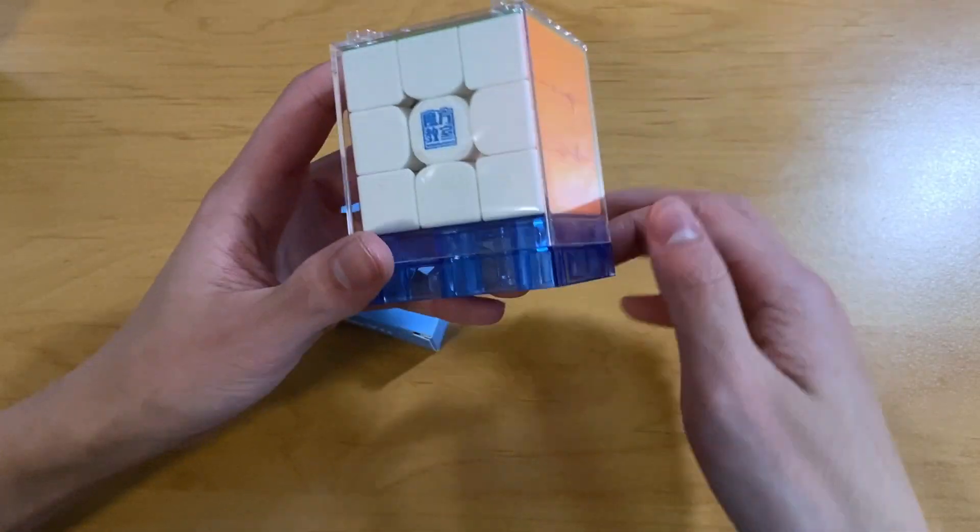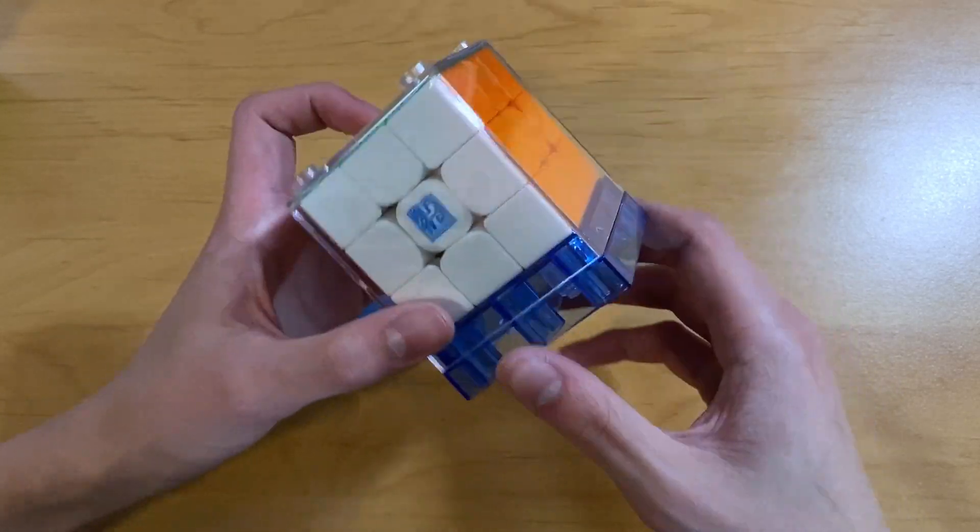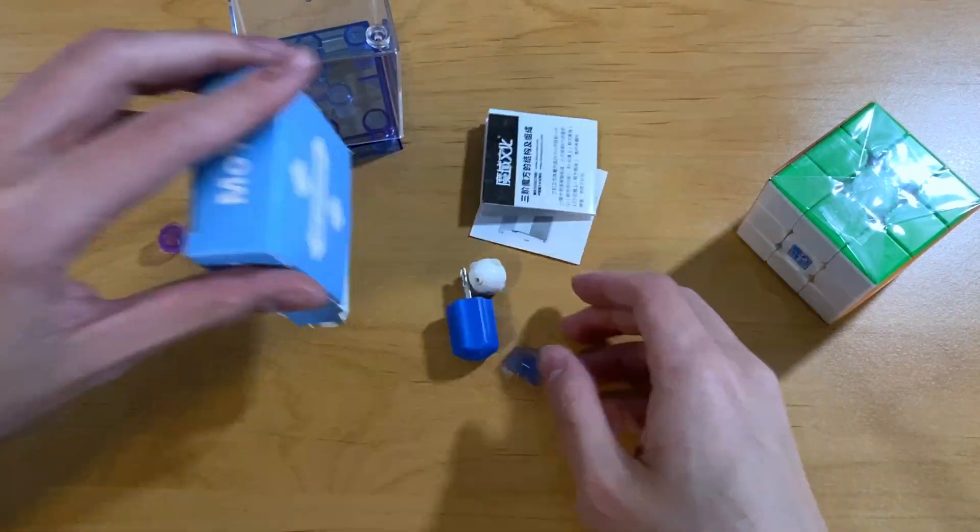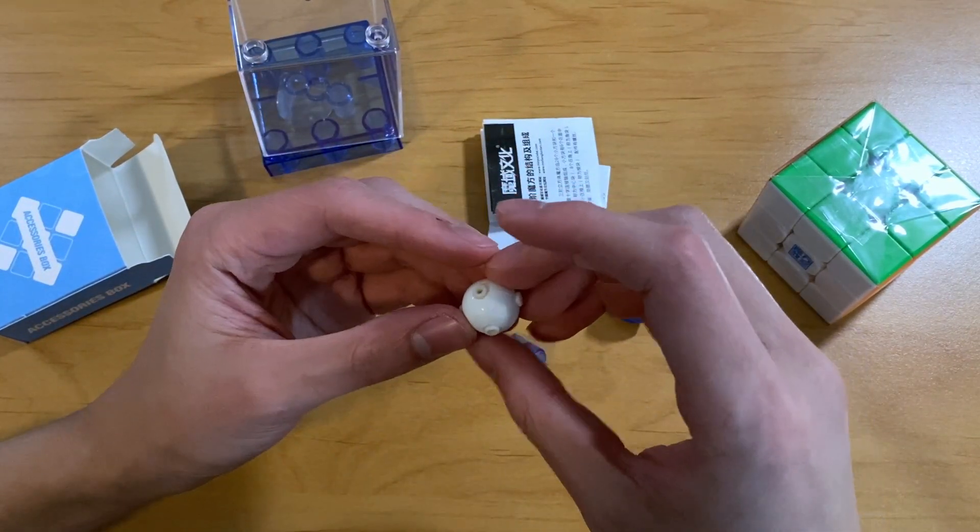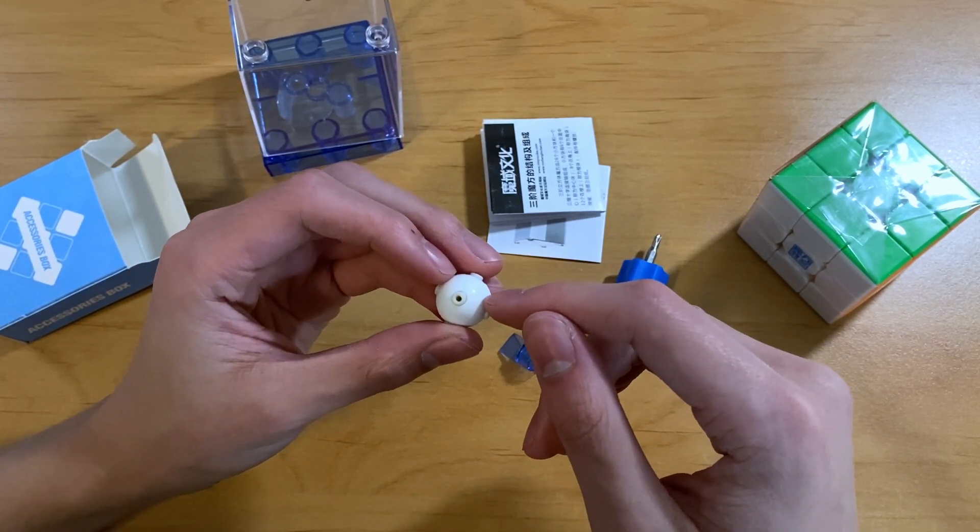It comes with the box. I don't know when they started doing this because I don't think the RS3M21 came with this kind of box. We also have an accessories box inside. It looks like they give us an extra core, but this one doesn't have the magnets, so I guess if you don't like the corner core mags, you can replace it with this.